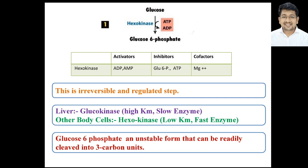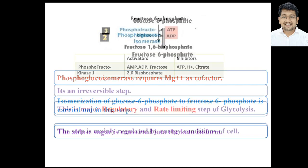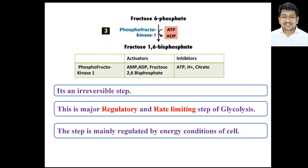Glucose-6-phosphate is an unstable form that will be readily cleaved into three-carbon products, but before cleavage, it is first converted into fructose-6-phosphate by the enzyme phosphoglucose isomerase. This enzyme requires Mg²⁺ as a cofactor and carries out the isomerization of glucose-6-phosphate to fructose-6-phosphate, converting an aldose sugar into a ketose sugar.